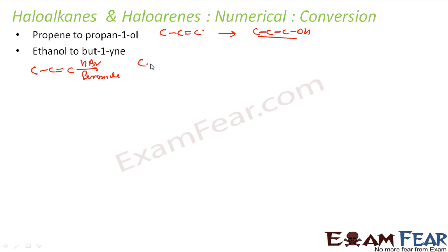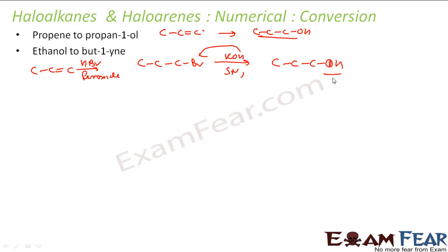Adding HBr with peroxide gives 1-bromopropane. Then using KOH (aqueous), OH replaces Br via nucleophilic substitution to give 1-propanol. Since it's a 1° carbon, there's a chance of SN2, but either way propanol is obtained. An alternative method is hydroboration-oxidation, though that's more complex.